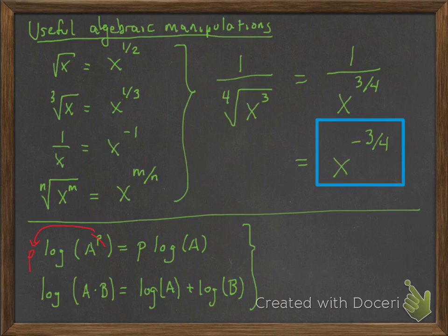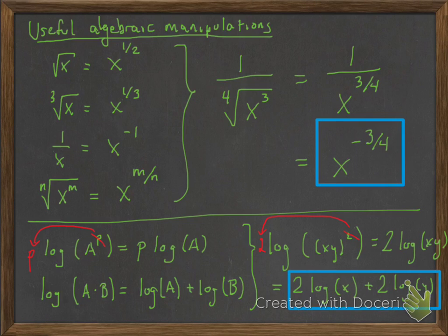So let's take a look at an example. Log of xy squared. That 2 is going to come live out in front. And then by that second property, you have log of x times y, so you're going to be able to split that up into addition.